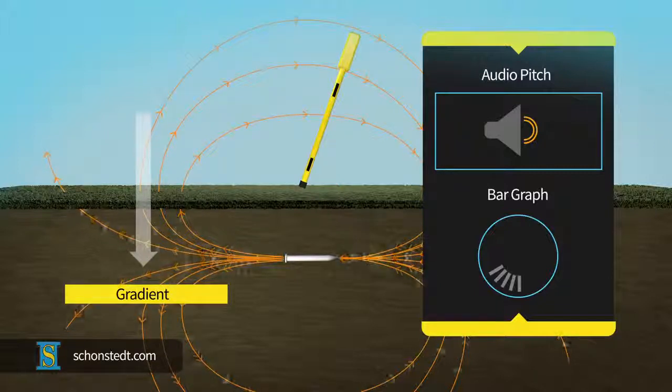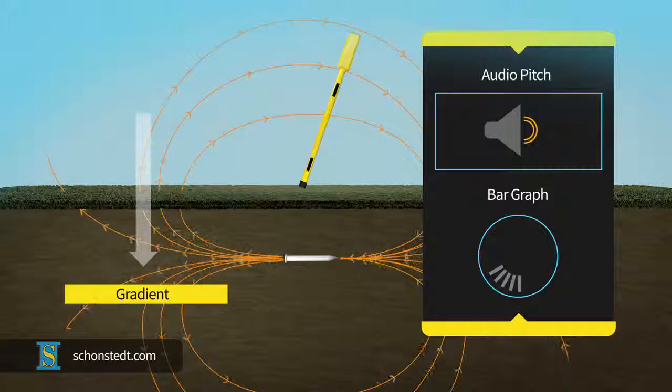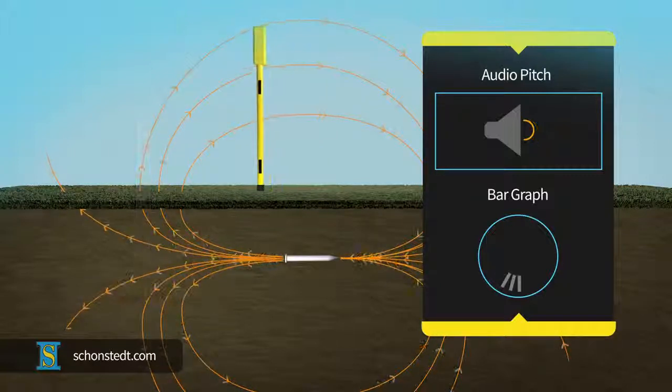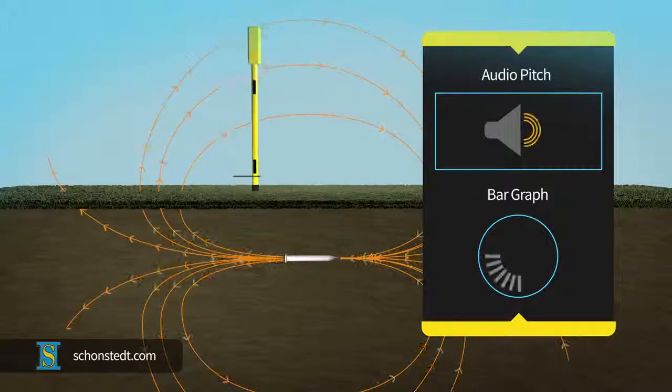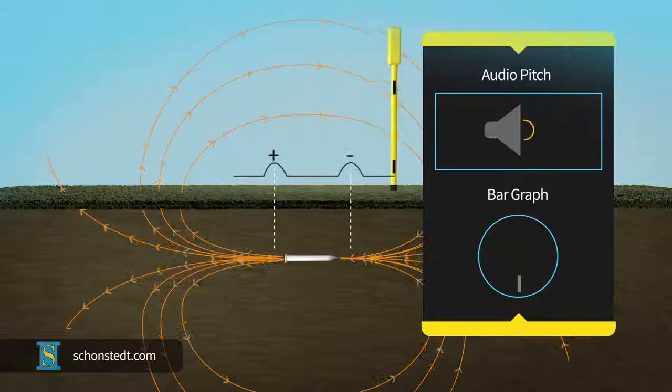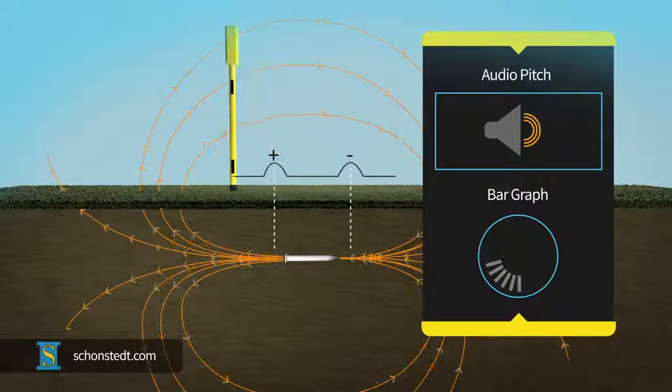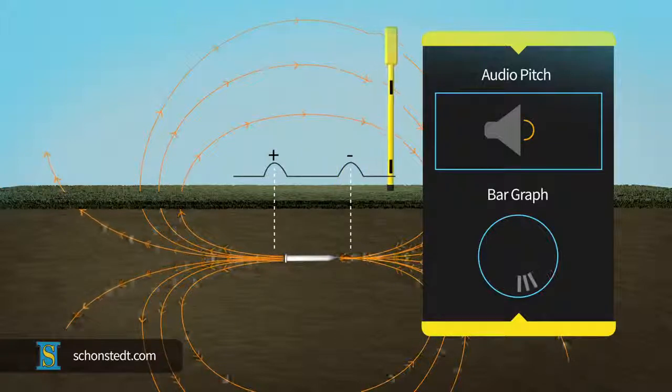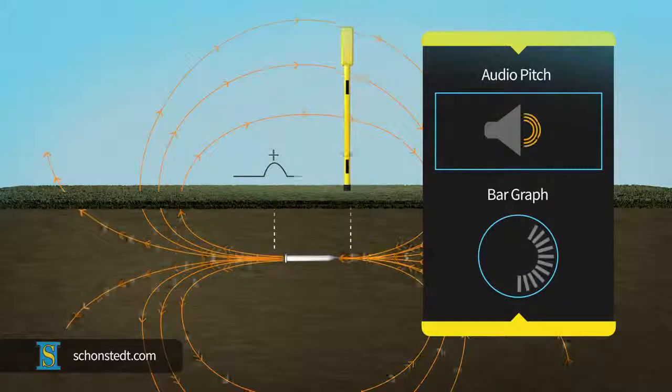The same object oriented vertically will generally produce a larger difference. Some Schonstedt locators also indicate polarity, which can be useful in determining if the target is oriented vertically or horizontally. This is accomplished by observing the polarity change at each end.